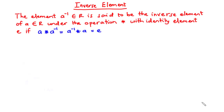Hello guys, and welcome back to this channel. In today's video we are going to continue our lesson on binary operations. We are going to discuss the inverse element. The element a-inverse, which is a member of r, is said to be the inverse element of a, also a member of r, under the operation star with identity element e, if a star a-inverse is equal to a-inverse star a.